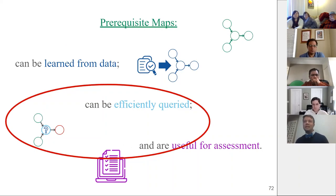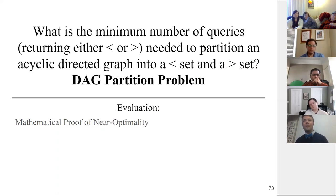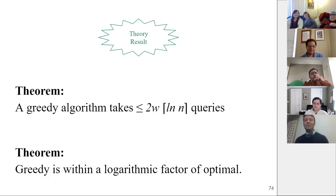Now that we've talked about how to build these, how do we use them? The simplest version is an entirely deterministic setting: we have a directed acyclic graph, we can query each node, and we want to minimize the number of queries to label the entire graph — separating it into known and unknown things. This is the DAG partition problem, and surprisingly it hasn't been studied in the CS theory literature. The second major theory result is that the greedy algorithm is very close to optimal — not optimal, but off by at most a logarithmic factor, which in computer science is pretty good.